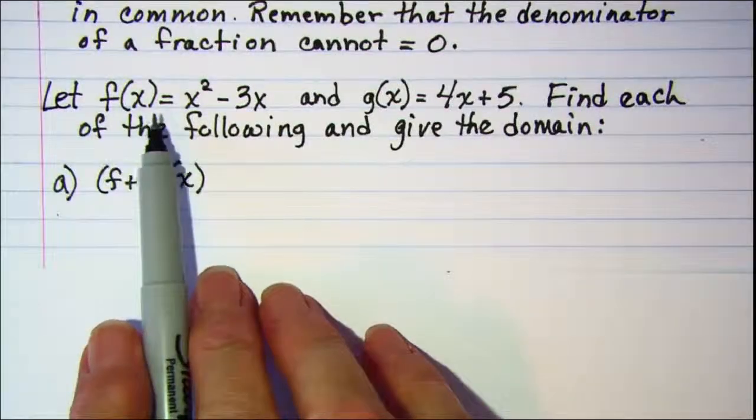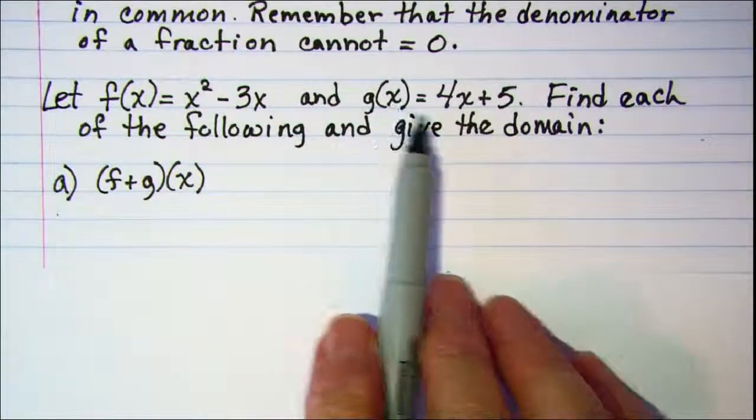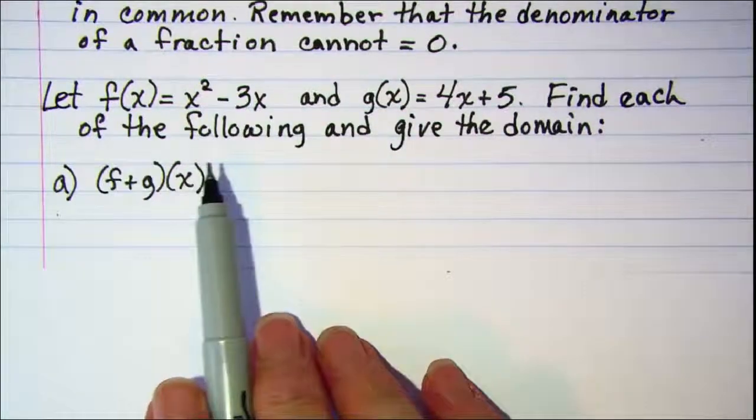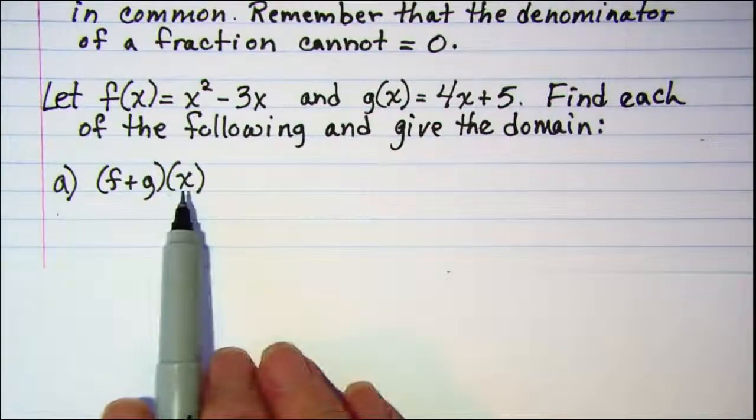Let f equal x squared minus 3x and g equal 4x plus 5. We're asked to find each of the following and give the domain: f plus g of x.